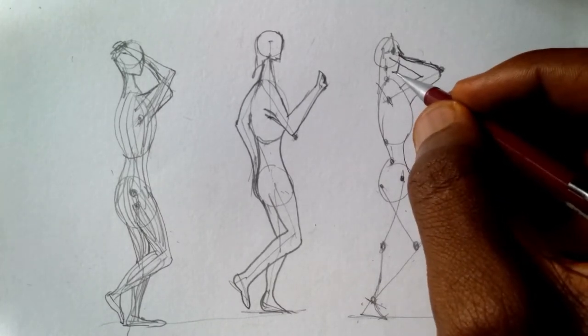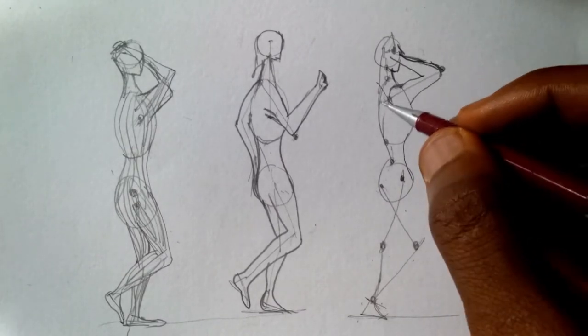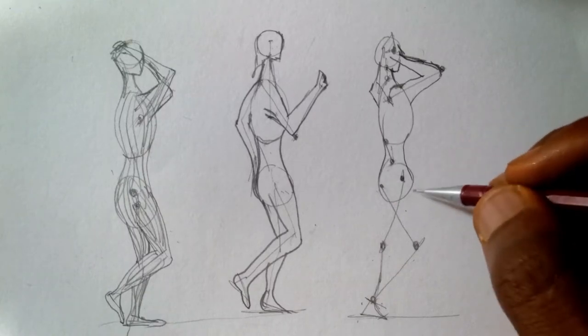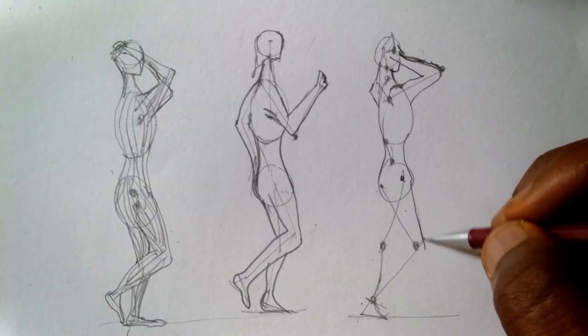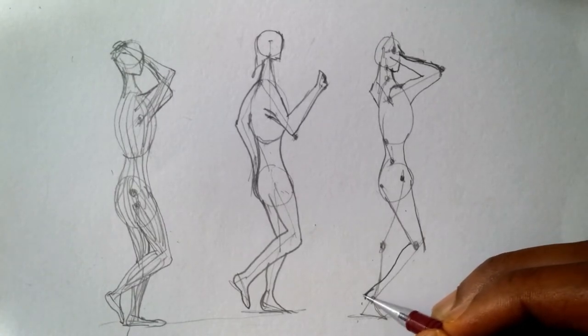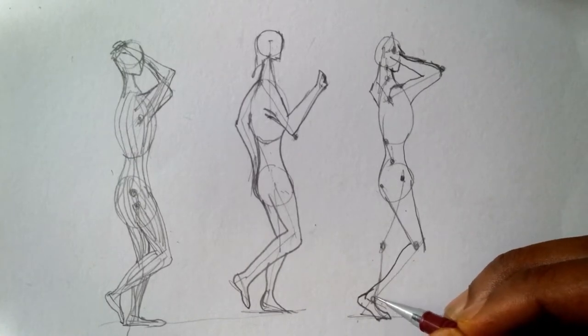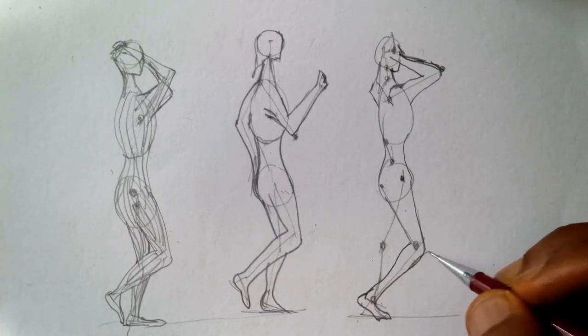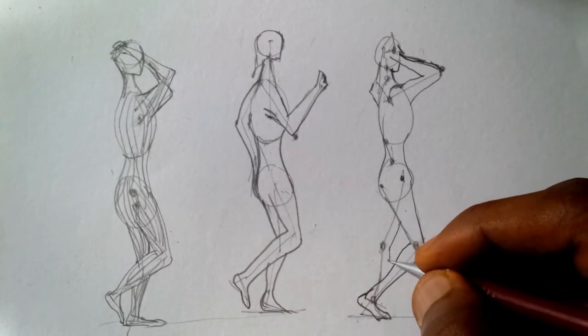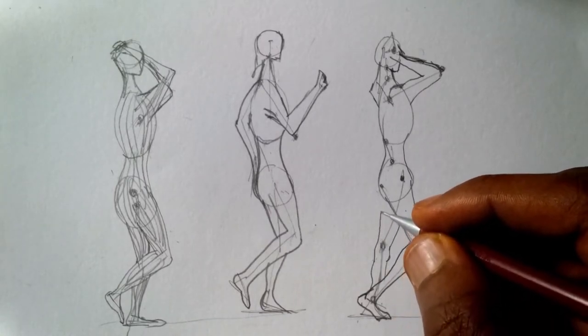We made good use of the skeleton to figure out the shapes. Remember we drew the oval shape. We drew the oval shape to represent the ribcage and pelvis. We drew the lines for the arm and the head. In this figure, this gold figure, we are trying to build a perfect human figure.